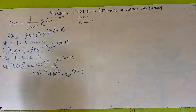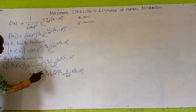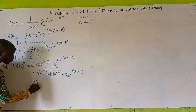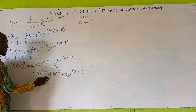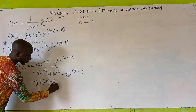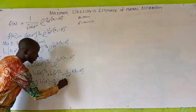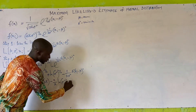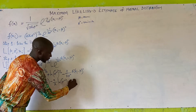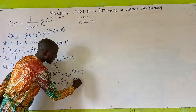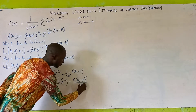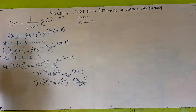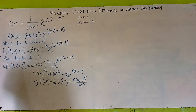We can also write this as: the log-likelihood equals minus n over 2 times log(2 pi), minus n over 2 times log(sigma squared), minus 1 over 2 sigma squared times the summation of (x_i minus mu) squared. This is the simplification after taking the natural log of the likelihood of this distribution.